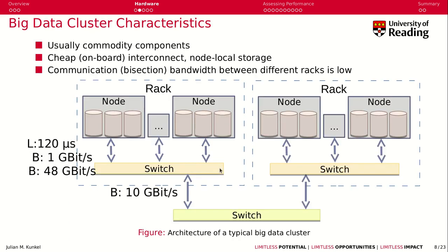First, we look at the hardware capabilities. Let's understand the characteristics of a big data cluster. We typically buy commodity components — they are rather cheap and standardized, and you can buy them by the thousands. They provide an interconnect, a network interface that is on board, and they have local storage. With them, we can build a topology as seen with Hadoop: a rack with nodes that have multiple storage devices, connected with a fast switch inside the rack, and a slower connection to a global backbone switch in a tree topology connecting additional racks.